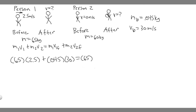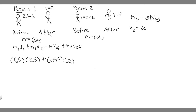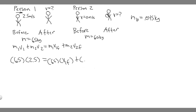Actually, I need to correct that. The 30 meters per second belongs on the right side — that's the snowball's speed after it's thrown, not before. In the beginning, the snowball isn't moving, so v2 initial is just 0, and 0 times anything is 0. So that term drops out. The correct equation is: 65 × 2.5 = 65 × v1_final + 0.045 × 30.